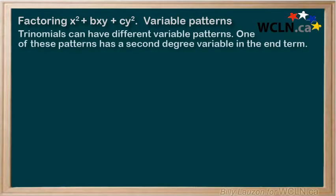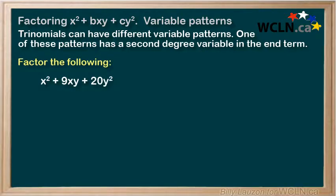Trinomials can have different variable patterns. One of these patterns has a second-degree variable in the end term. Let's look at factoring the following: x² + 9xy + 20y².